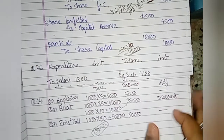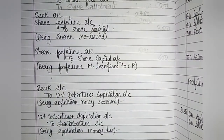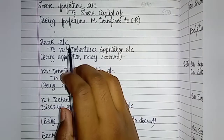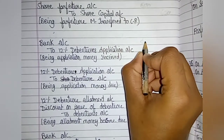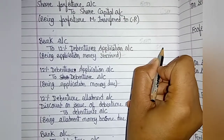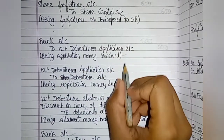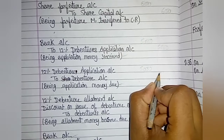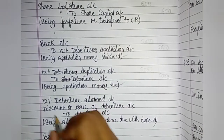So let's now write the journal entries. First entry — on application: Bank Account debit with Rs. 5,000, To 12% Debentures Application Account Rs. 5,000. Narration: being application money received. Next entry: 12% Debentures Application Account debit Rs. 5,000, To Debentures Account Rs. 5,000. Narration: being application money transferred.